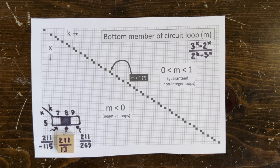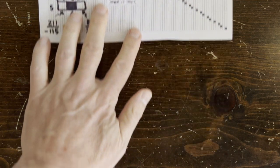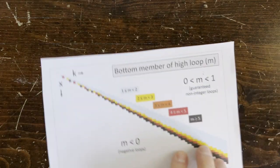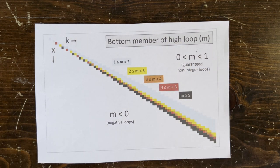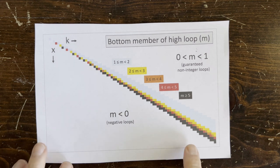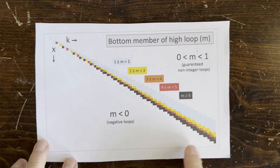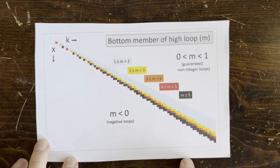Okay, now let's consider all possible loops, not just circuits. Actually, we only need to consider high loops. That's because if the bottom member of the kx high loop is less than 1, like up here, then we know the bottom members of all other kx loops are also less than 1.